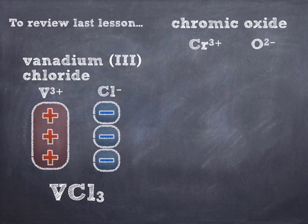Chromic oxide — you'd have to look up the old school classic name for that. That's actually chromium 3 oxide. I don't have to tell you the charge of the oxide or any anion, because they all have only one charge based on their location on the periodic table — they're all main block elements. But for chromium I do have to look it up, and that's a plus 3 charge.